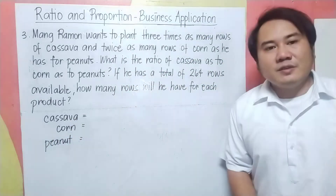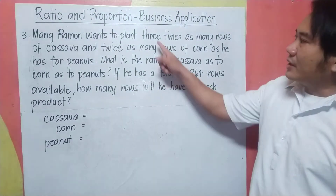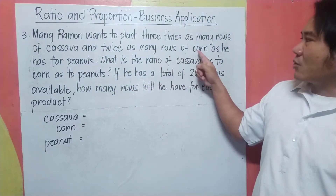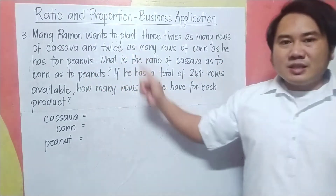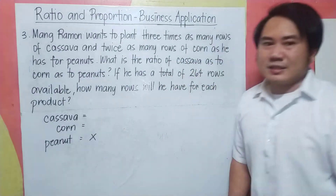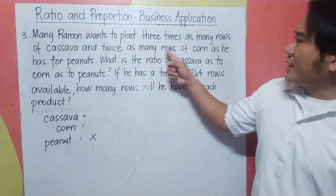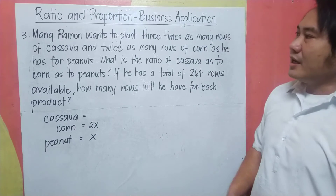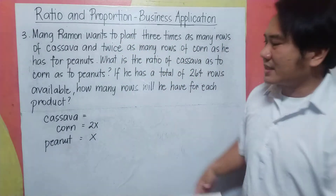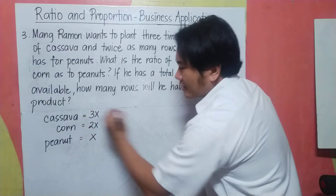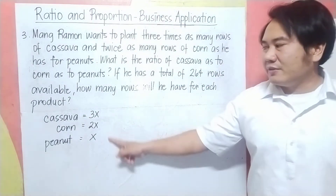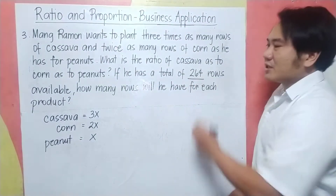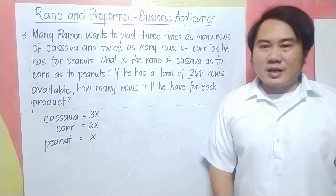Going back to the problem: we let x as the number of peanut rows. Since Mong Ramon wants twice as many rows of corn as peanuts, corn equals 2x. He wants 3 times as many rows of cassava, so cassava equals 3x. These are the individual ratios of each product — cassava: 3x, corn: 2x, peanuts: x. Next, since Mong Ramon has 264 rows available, we find how many rows each crop gets.